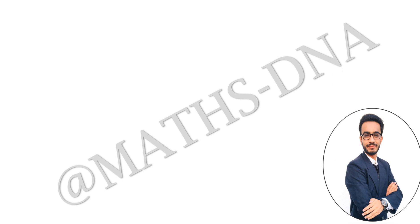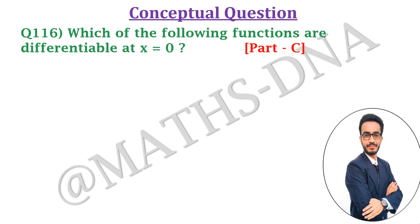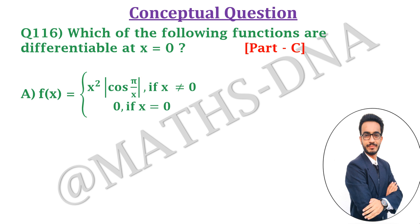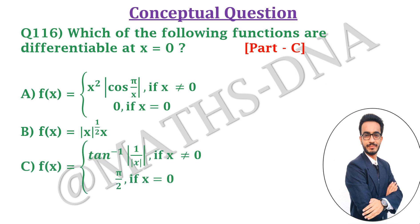In this video, we are going to discuss a very important question of real analysis on the topic differentiability. The question is: which of the following functions are differentiable at x equals 0? This is a part C question, so there are more than one correct options. Option A: f(x) = x² · |cos(π/x)| if x ≠ 0, and 0 if x = 0. Option B: f(x) = |x|^(1/2) · x. Option C: f(x) = tan⁻¹(1/|x|) if x ≠ 0, and π/2 if x = 0. And D: all of them.